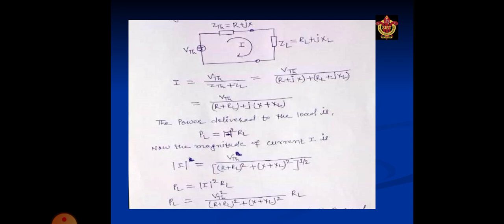The power delivered to the load is PL equal to I square RL. I is the magnitude current. The magnitude of the current I is VTH upon R plus RL square plus X plus XL square under square root. Now PL equal to VTH square upon R plus RL square plus X plus XL square, that is the current into RL.